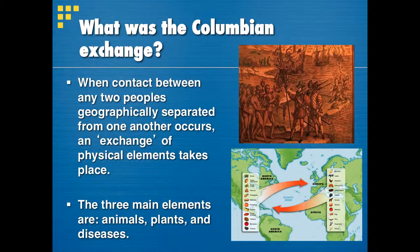How did the intermixing of two completely separate continents change the world? North and South America were basically one giant land mass, and Europe, Asia, and Africa were basically one giant land mass that did not have any contact with each other. What happened when that isolation was broken? The three main elements we are going to focus on are animals, plants, and diseases.